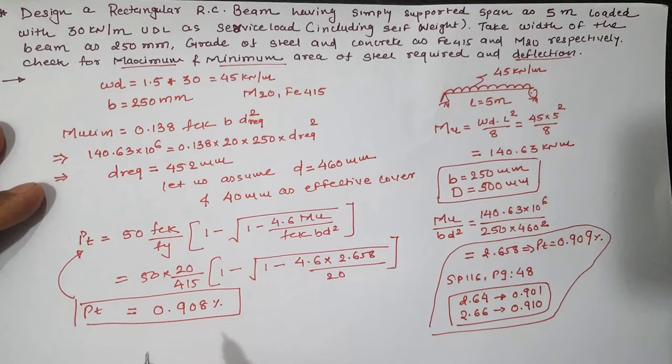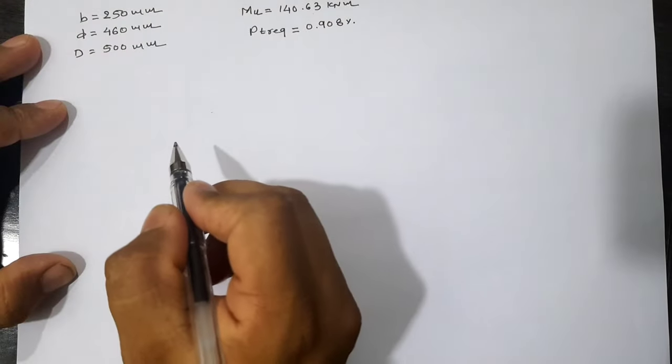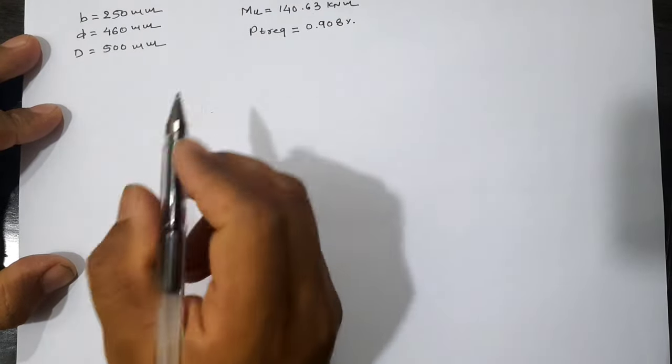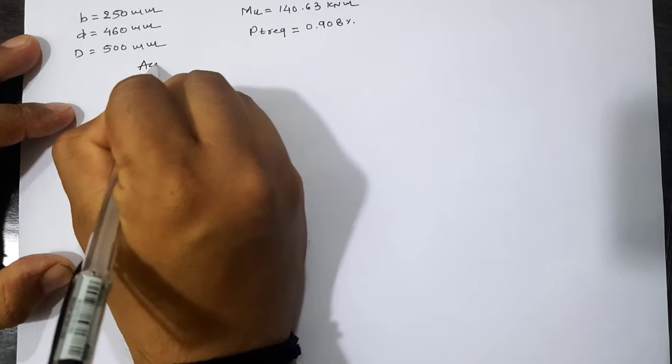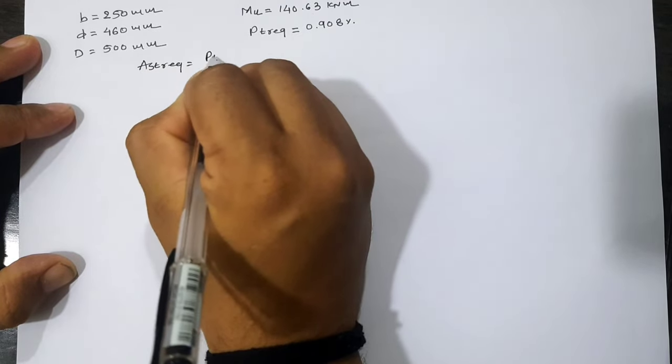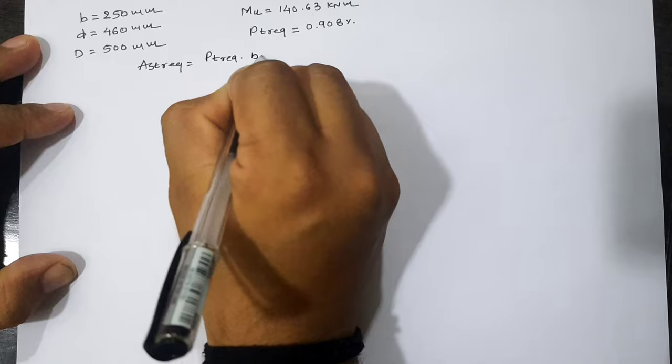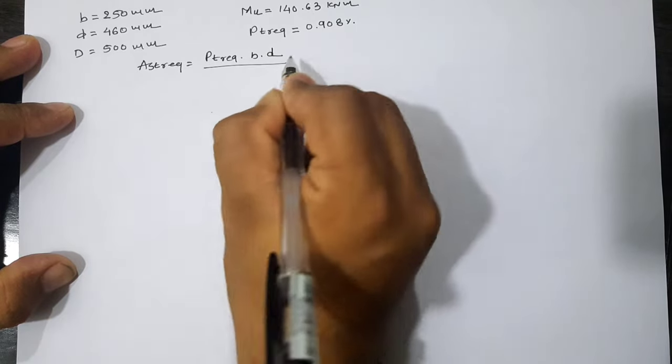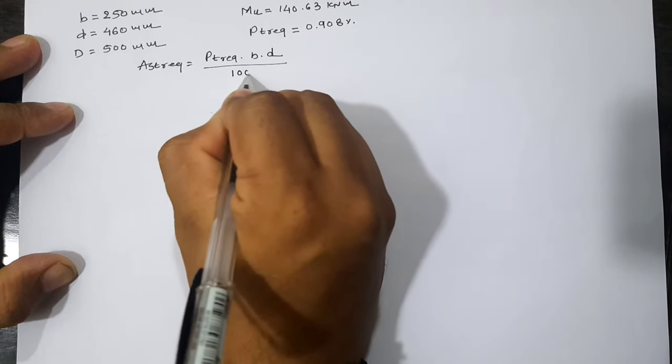By interpolating these values for 2.658, we have Pt equal to 0.909%. We can take 0.908% as Pt. AST required equals Pt required times b times d divided by 100, which gives 1044.2 mm².